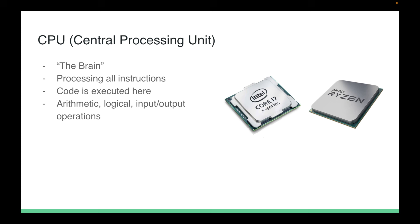We're going to start with the CPU, or central processing unit. We can consider it to be the brain of the computer. It's responsible for processing all instructions sent from computer programs, peripherals, etc. Any action is executed in the CPU, and any arithmetic or logical operations are done in the CPU — this is basically where all the magic happens.